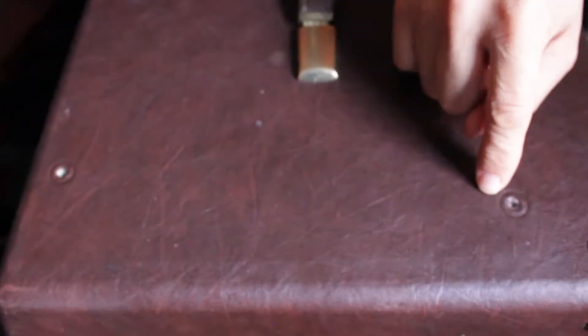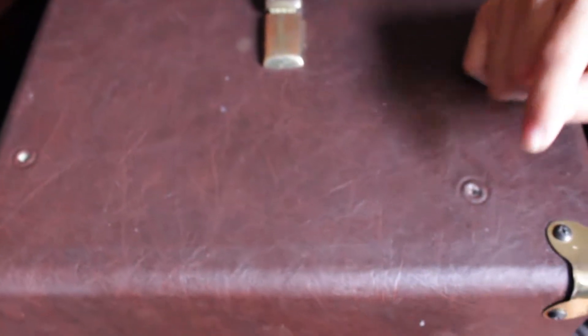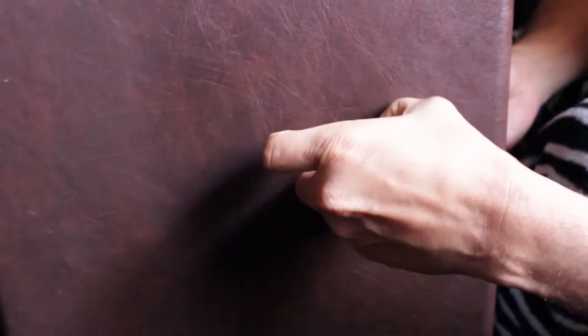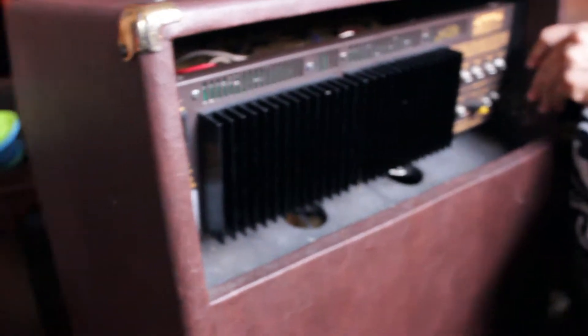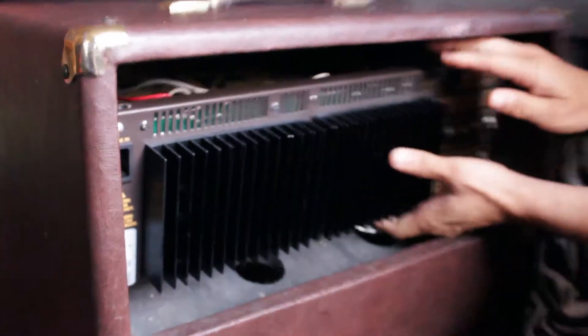First, there's four screws on top, two on the left and two on the right. Then there's two on the side, one on each side. You just remove these screws. I already have them removed so we don't waste time.